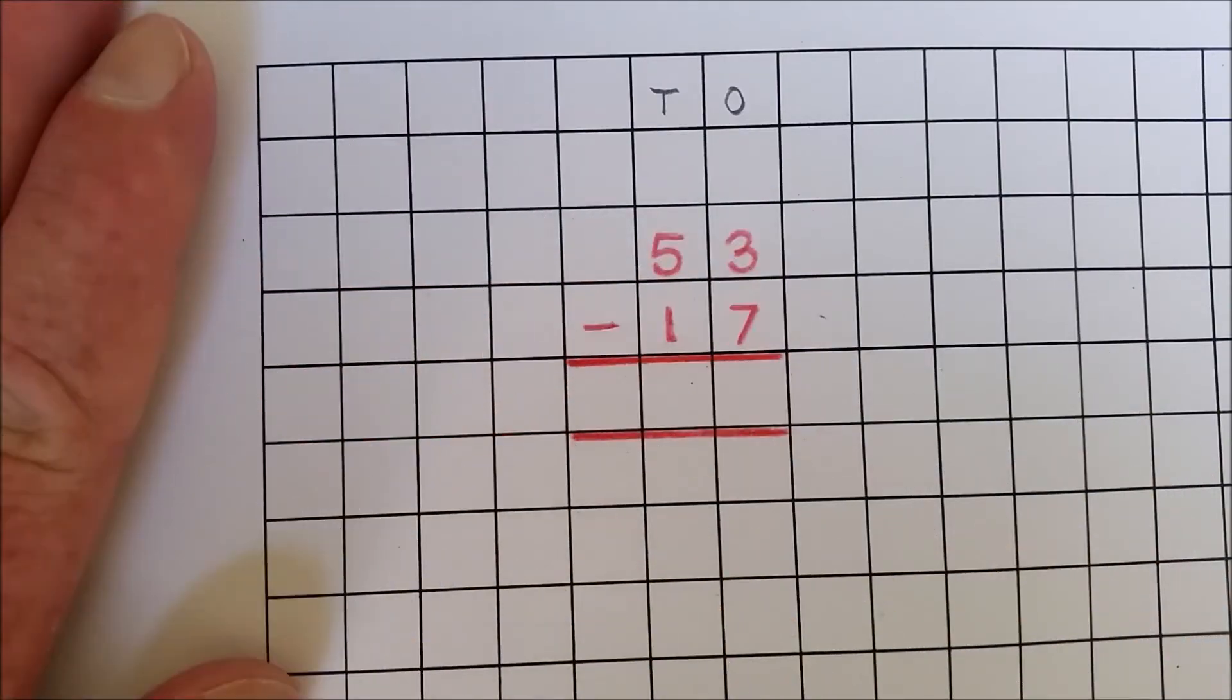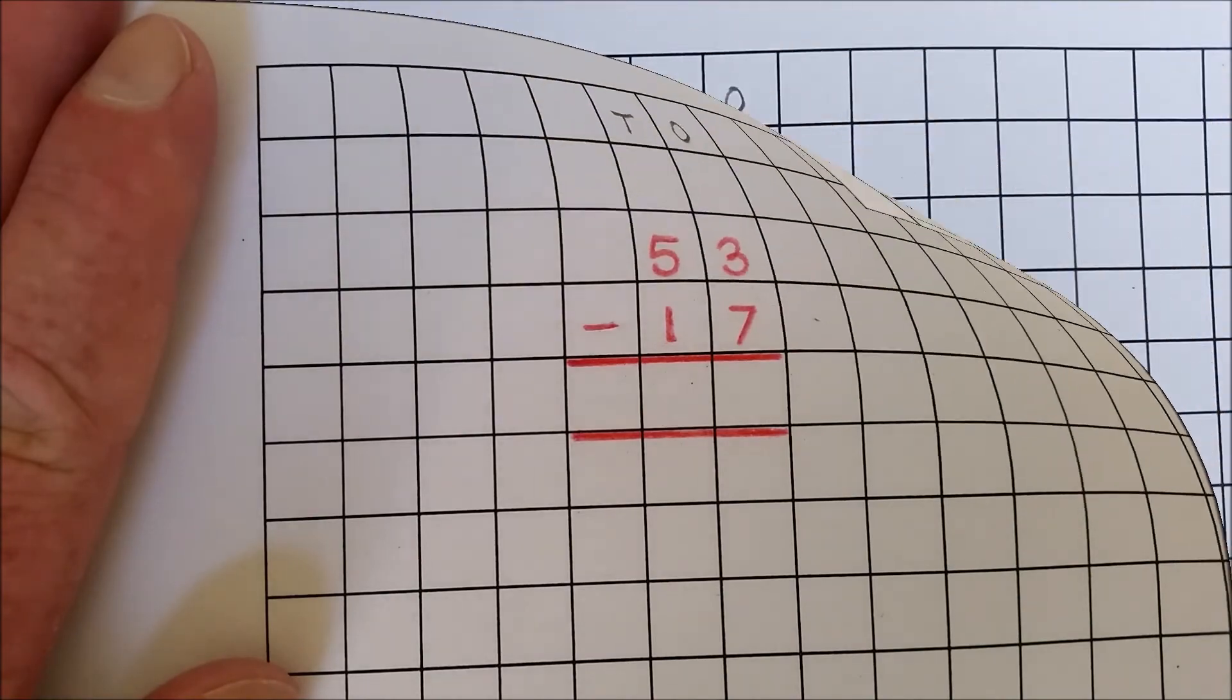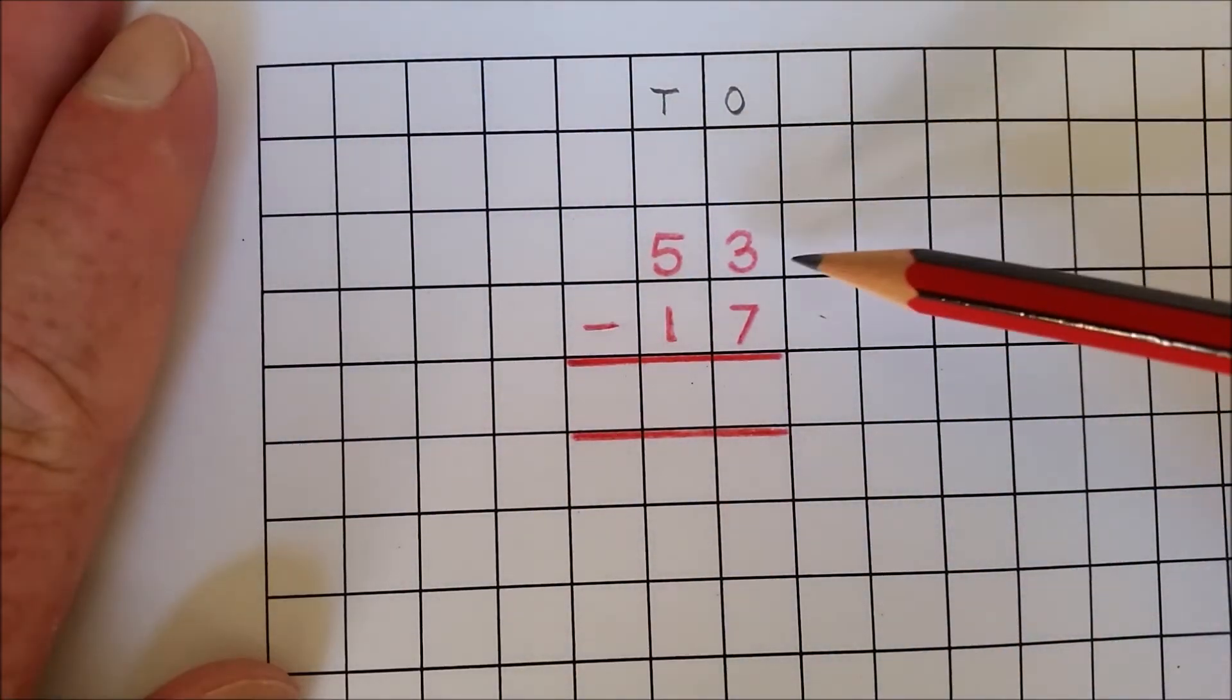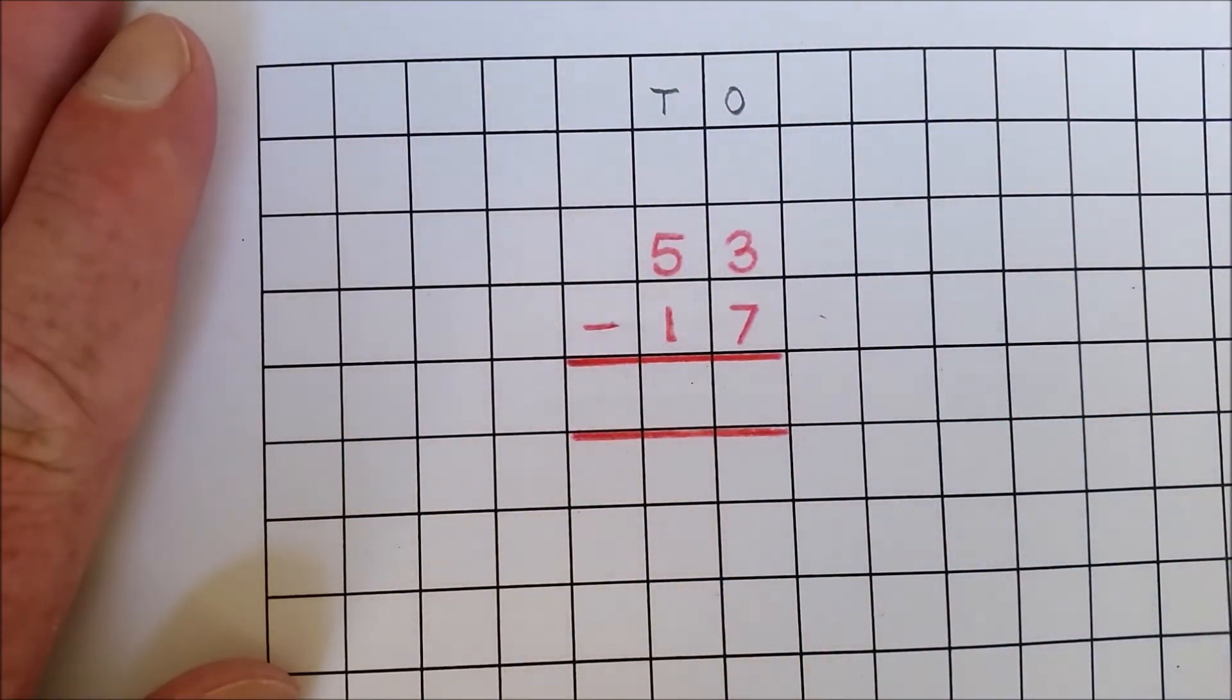The problem 53 take away 17 is recorded as follows. Subtract the ones. Three ones take away seven ones, there are not enough ones, so I need to rename.